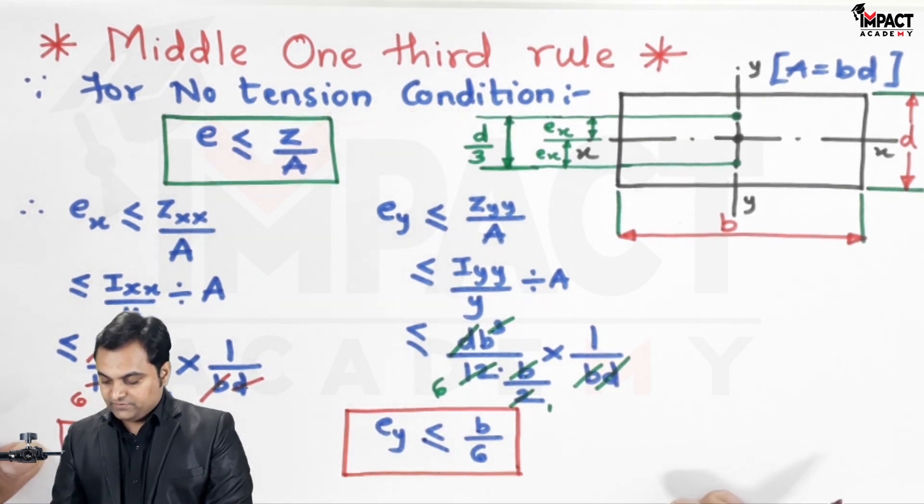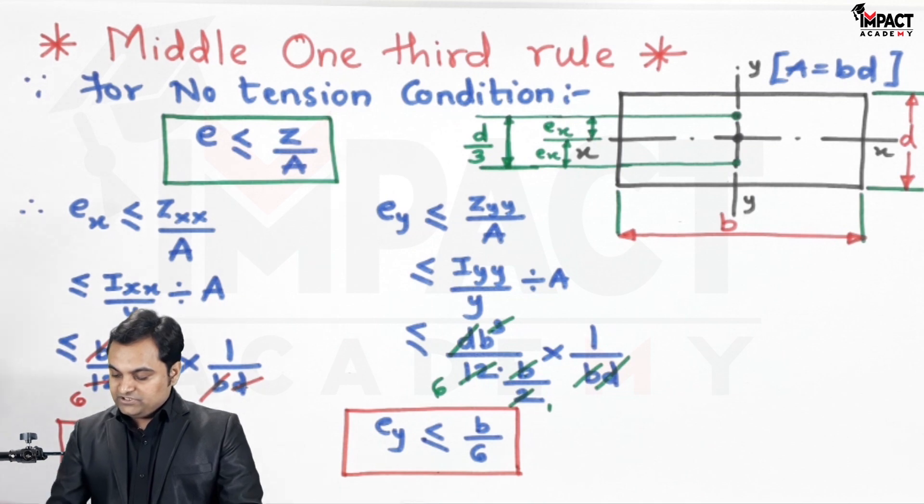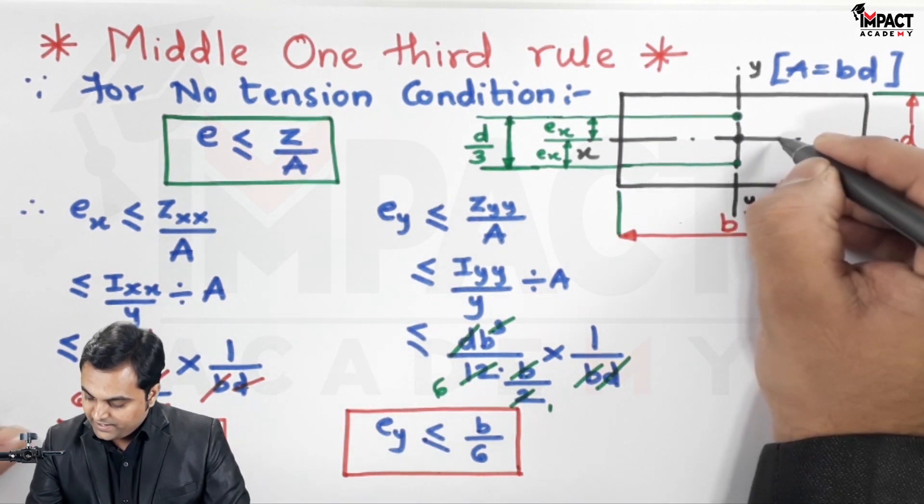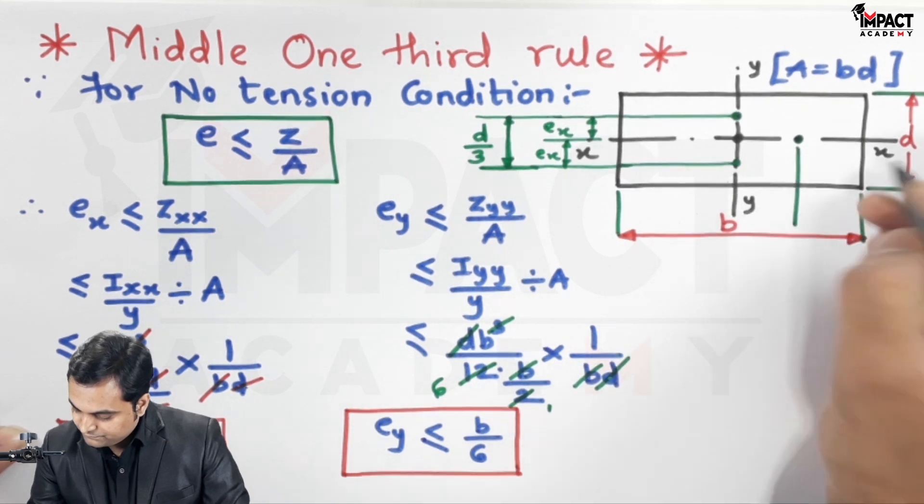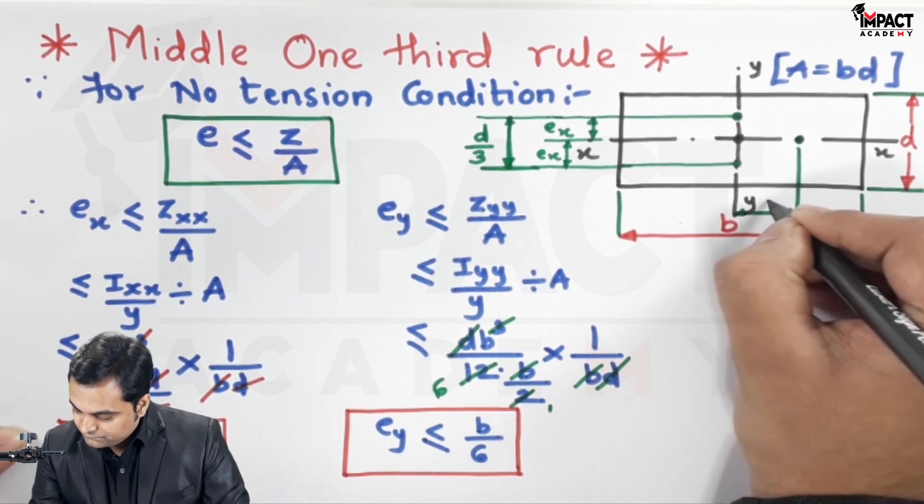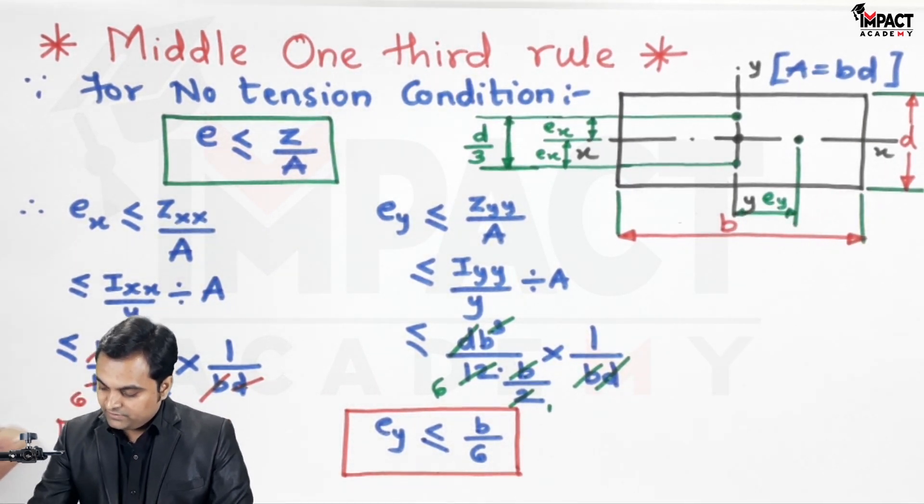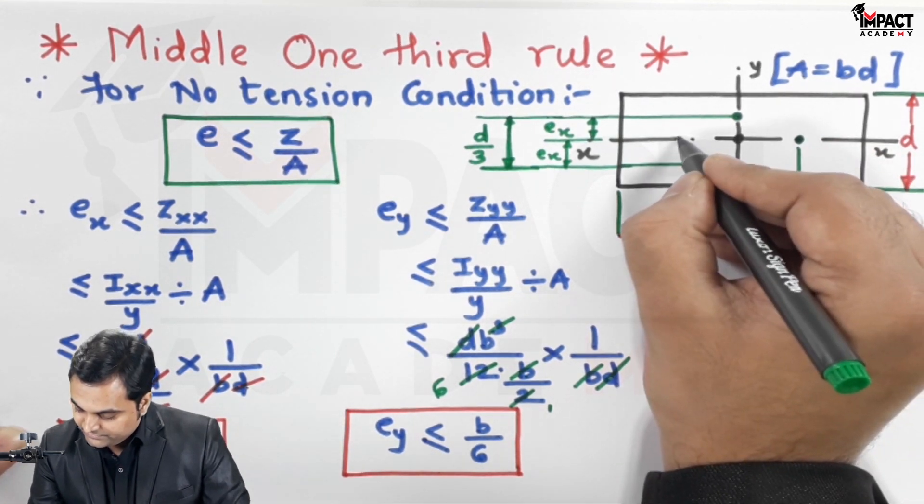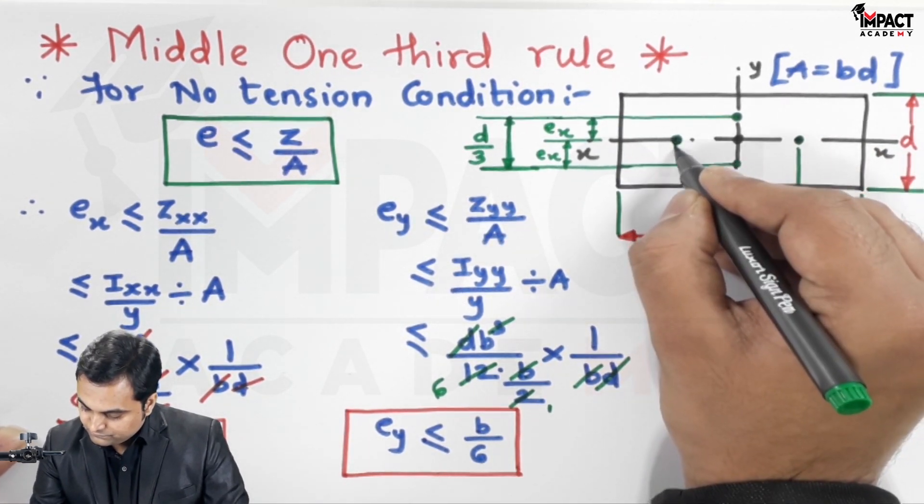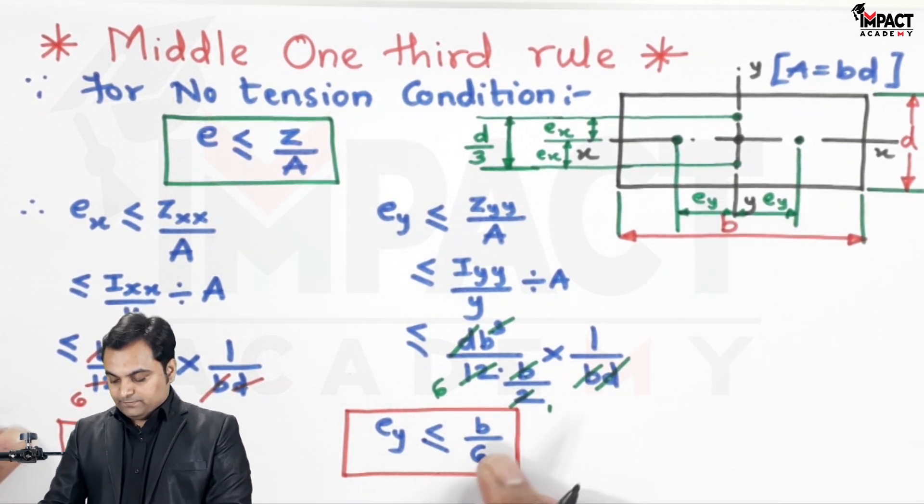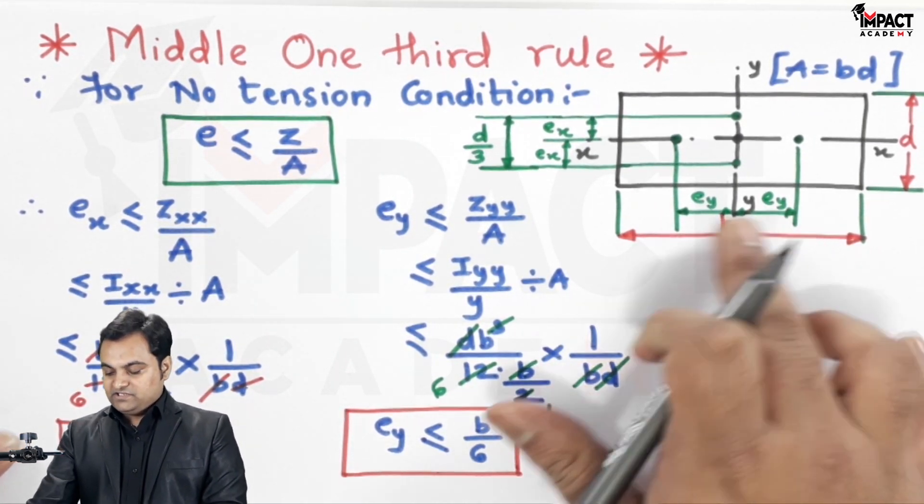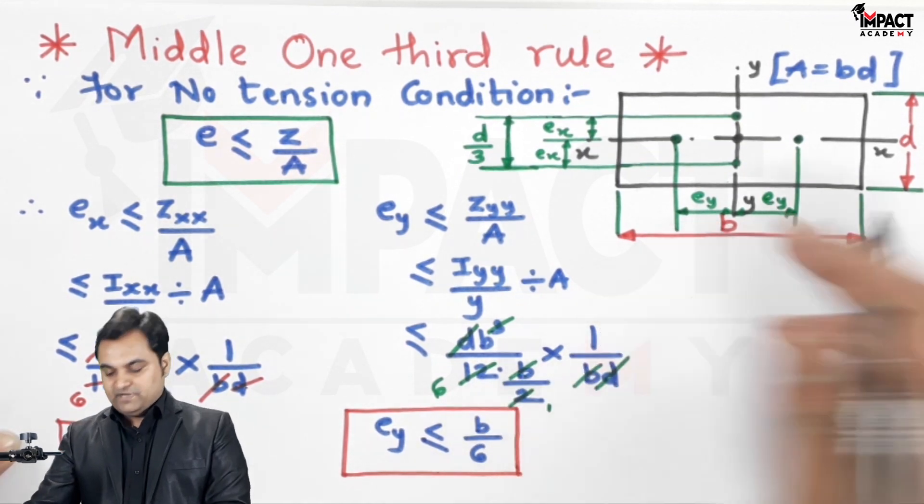This is the eccentricity with respect to y-axis, so measuring the distance from y on one side, it gives me e_y. Similarly onto the other side, so e_y is b/6. b/6 plus b/6 becomes b/3.